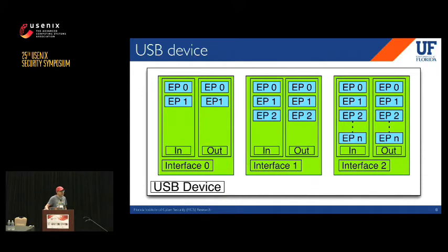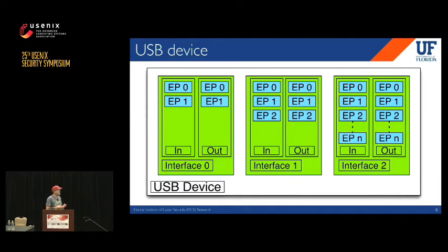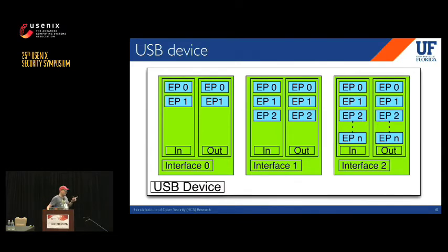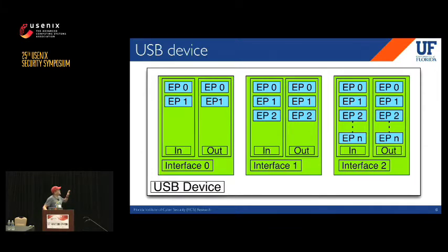A USB device can have multiple interfaces, each of which is a standalone functionality. For example, a USB headset may have interfaces for audio, speaker, and volume control. Within an interface, there are endpoints grouped based on the direction of USB communication. If communication is from host to device, it is 'out'; otherwise it is 'in', meaning from device to host. Once we know the device, interface, and direction, the real communication happens within the endpoint.